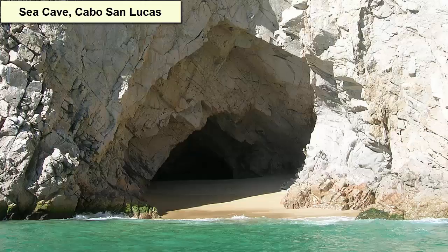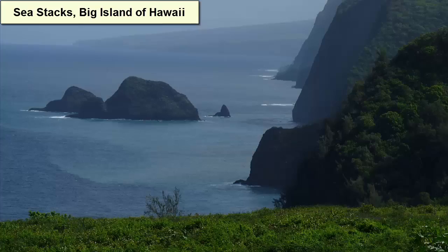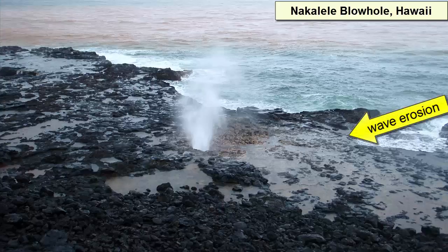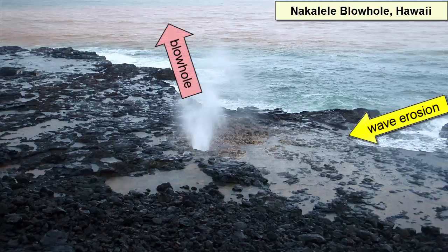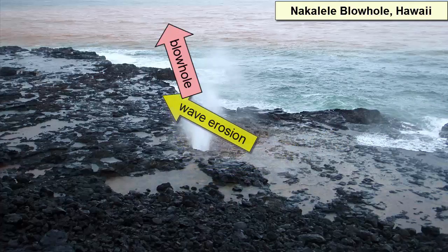When undercutting has been extensive and the cliff is yet to fail, we get sea caves and sea arches. When the roof above a sea arch finally fails, an island is left offshore. We call these sea stacks, and where erosion in sea caves has carved holes to the surface we get blowholes. Blowholes can be quite dangerous because large waves will frequently push into the cave and out the blowhole, taking coastal explorers unaware.